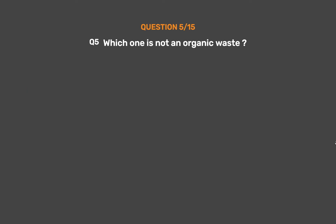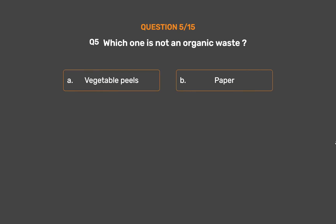Question Number 5. Which one is not an organic waste? Option A: Vegetable peels. Option B: Paper. Option C: DDT. Option D: Cotton cloths.